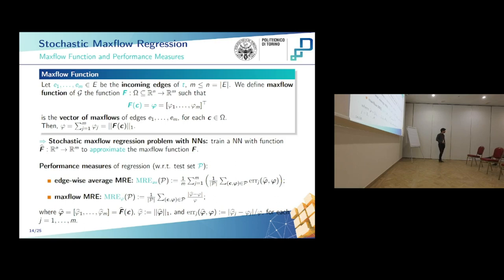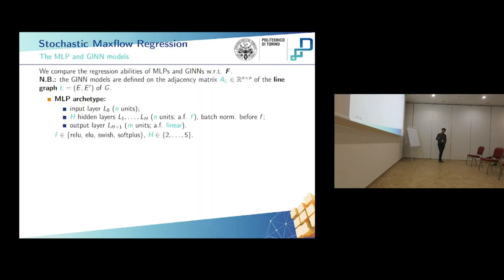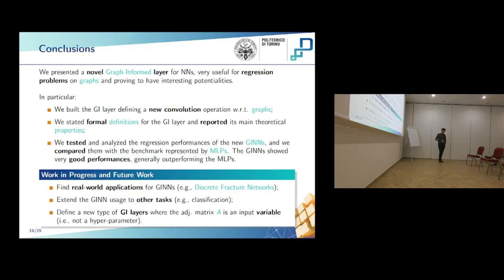You mentioned wanting to apply GI layers to a neural network where the adjacency matrix A is a variable rather than fixed. The idea is that if we build a GI layer where A is no longer fixed but can be an input to the neural network, we can apply GINNs to problems where the graph structure changes — for example, a time-evolving graph. In the case of discrete fracture networks, we have a probability distribution that generates the connections, so we train the neural network over the distribution of networks, enabling more general predictions with respect to the distribution of flows.